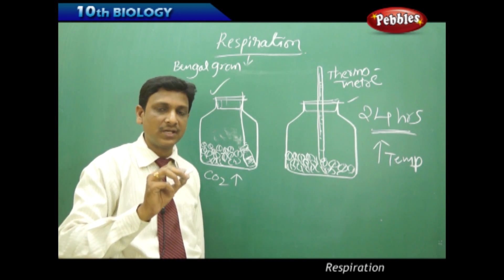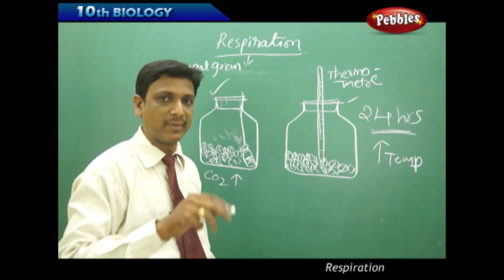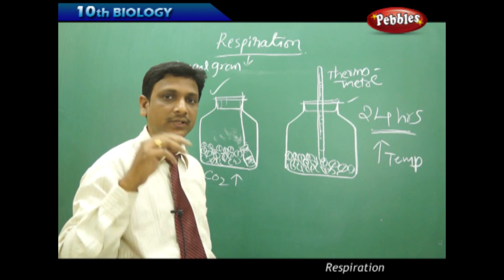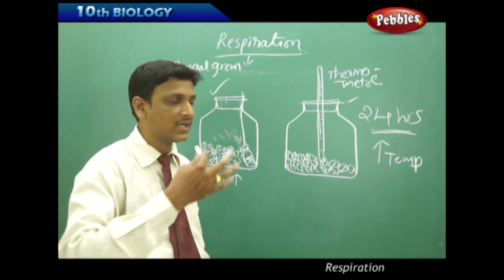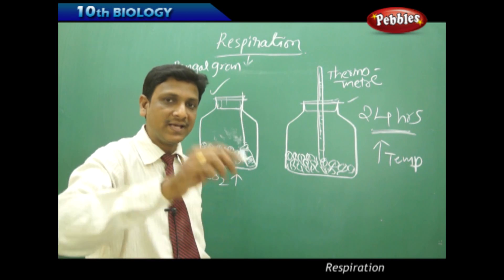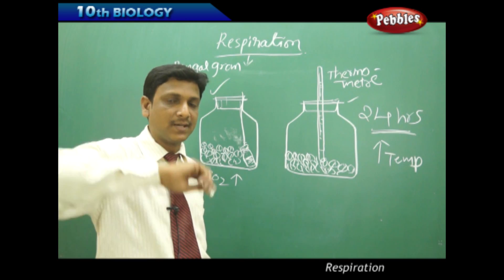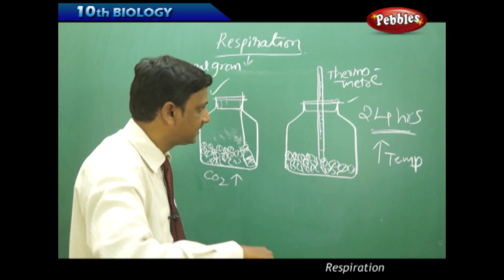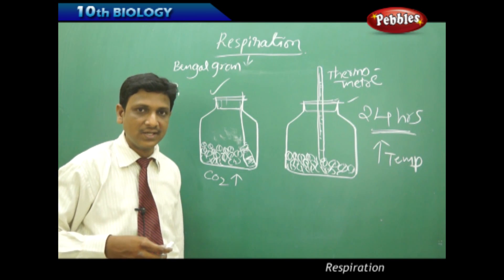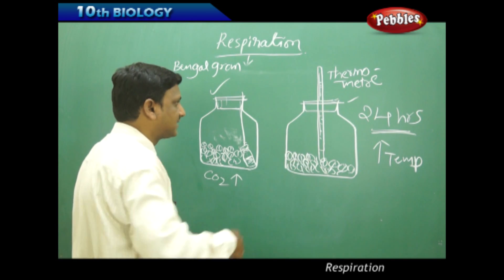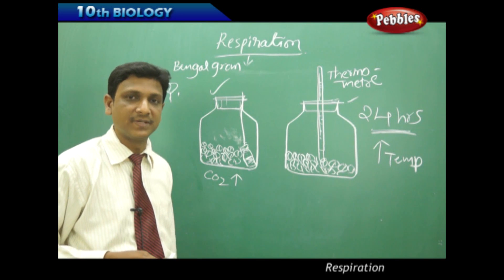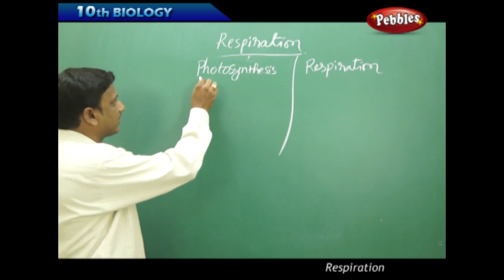You will find the temperature slowly increases as respiration continues. You can record observations every hour — for example, starting at 10 o'clock, then at 11, 12, 1, 2 o'clock — over 5 to 6 hours. Plot the data on a graph with time on the x-axis and temperature on the y-axis. By this activity we can show that heat is liberated during respiration.